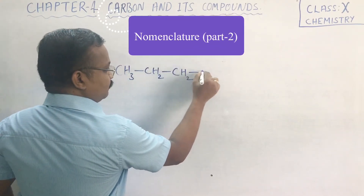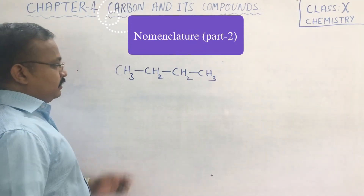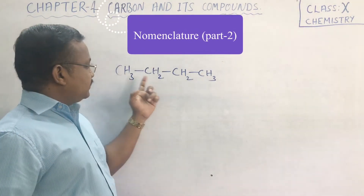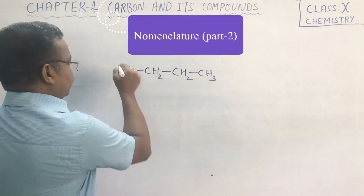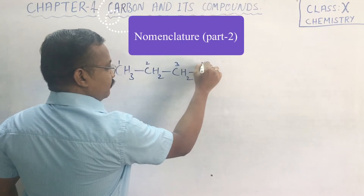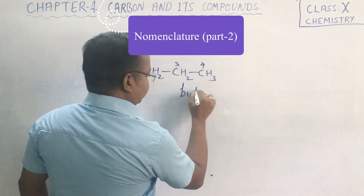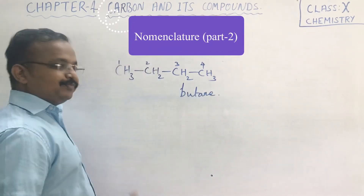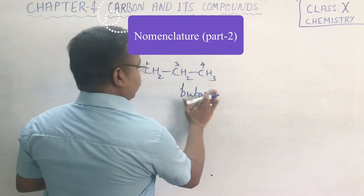I am writing here only the condensed forms. This is a compound: CH3-CH2-CH2-CH2-CH3. By numbering 1, 2, 3, 4 we get butane — this you have already studied.